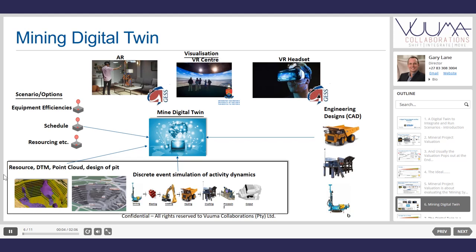A mining digital twin. The digital twin has been utilized in the motor industry quite significantly over the last 15 years. At BMW, they target a 3% improvement in efficiency every single year. It's one of the fundamental things that has allowed them to integrate all engineering disciplines and test different scenarios around production before committing to building the plant. A digital twin should consist of the resource model, the digital terrain model, a mine design, and a discrete event simulation of actual activities — a digital replica of your overall mining system.